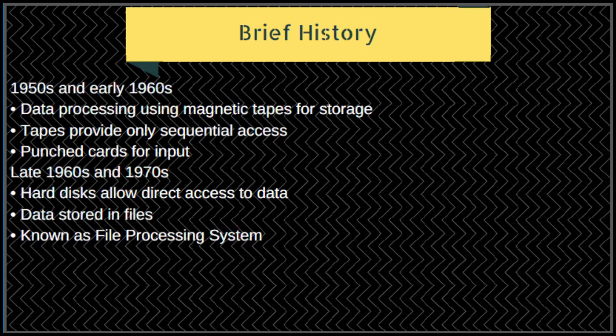From the 1950s to early 1960s, data processing was using magnetic tapes for storage, which provided only sequential access. Punch cards were used for inputs — a best example would be the Flintstones, where the character would punch his attendance.